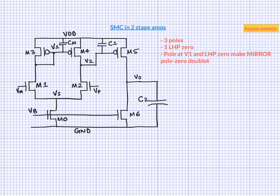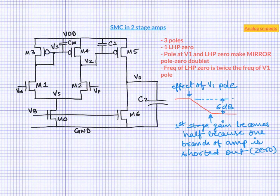The frequency of zero in this doublet is exactly double that of the frequency of the pole. This relationship makes intuitive sense because the pole at node V1 shorts the V1 node and this halves the first stage gain. Since these pole-zero doublets are closely placed, they tend to cancel each other's effect.